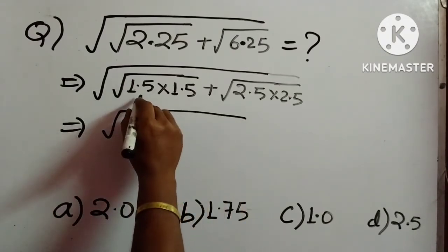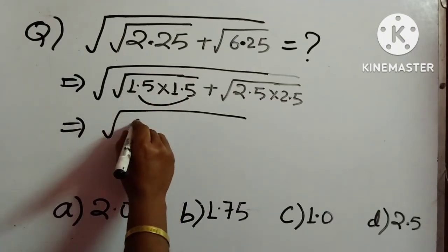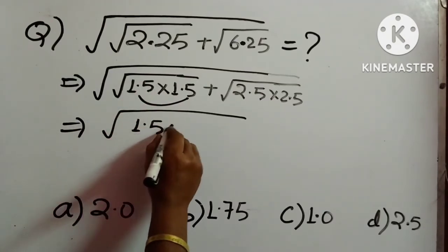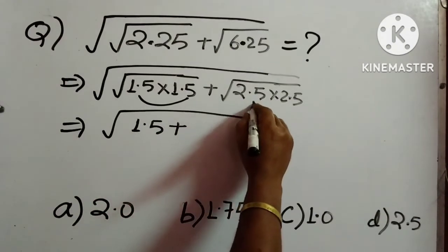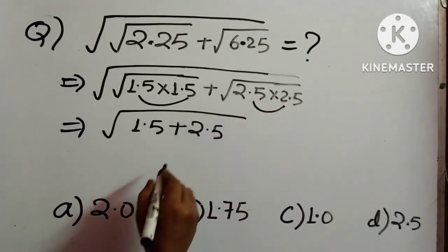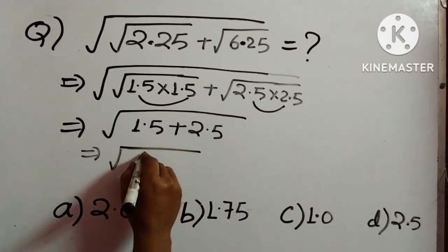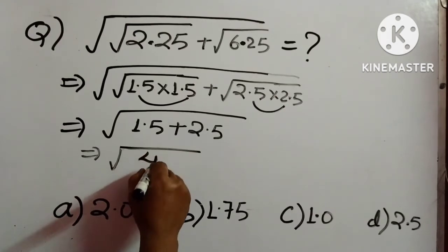Now, as it is square root, that means 1.5 will come outside. So 1.5 plus from here, 2.5 will come outside. Now 1.5 plus 2.5 is 4.